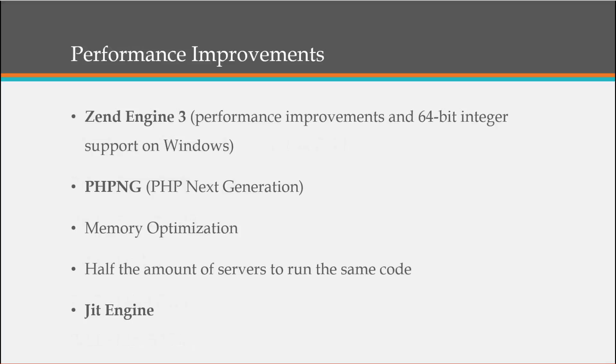Let's take a look at some of the performance improvements. We have the ZendEngine 3, which has improvements and is now able to handle 64-bit integers on Windows. ZendEngine 3 also includes PHP-ng, or PHP Next Generation, which is a huge upgrade that at the very least doubles the performance from PHP 5 to PHP 7. This also allows us to optimize memory use — you can actually run the same code on half the amount of servers. We also have the JIT engine, which we'll get into a little later.